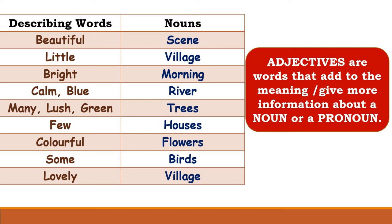So these words are called adjectives. Adjectives are words that add to the meaning or give more information about a noun or a pronoun. For example, if I say 'it is beautiful,' the word beautiful is telling us more about the pronoun 'it.' So adjectives also qualify a pronoun. This is the concept of adjectives.